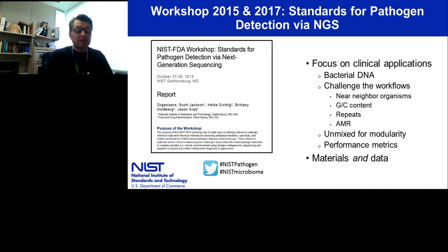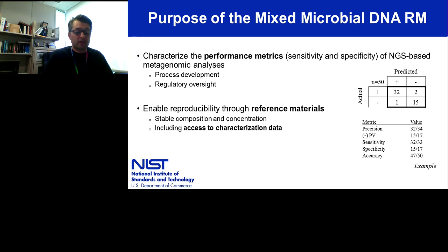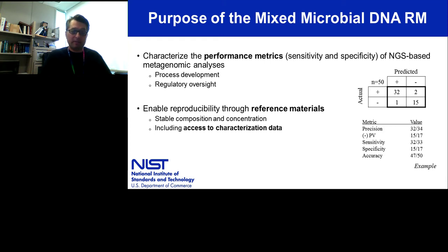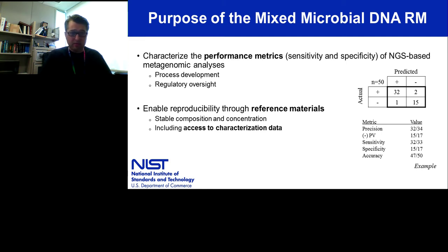The purpose of this material is to improve our understanding of performance metrics — sensitivity and specificity. This serves two purposes: it helps developers understand how well they perform and any potential blind spots, and it enables regulatory agencies to verify that tools are generally useful and can be adopted by everybody. For all this to happen, you need a reproducible reference material — it needs to be stable, you need to know the concentration, and you need to be able to verify all of that.